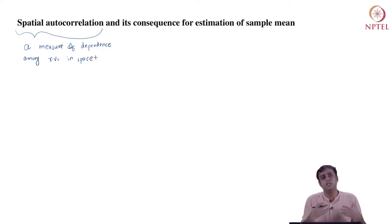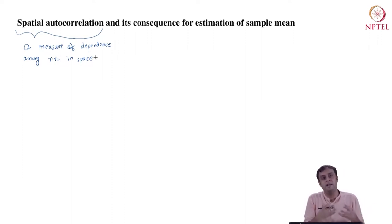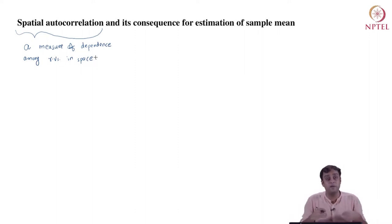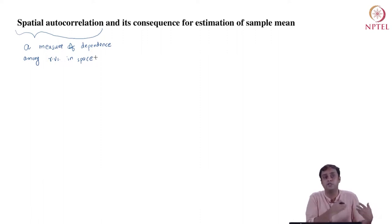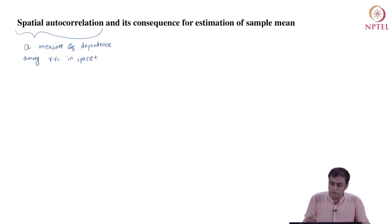Spatial autocorrelation is what binds random variables in space and ultimately lends them to become a random function. A random function is nothing but a collection of random variables which are jointly distributed. Spatial autocorrelation provides a specific mechanism for jointedness in the distribution of random variables in space.